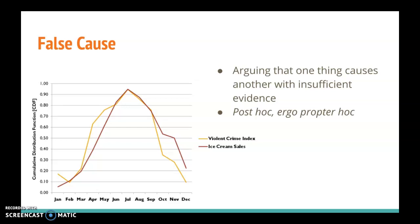And so I could probably draw the conclusion that if I were to eat ice cream, then I'm going to cause some kind of violent crime, right? Wrong. This would be an example of a false cause argument.